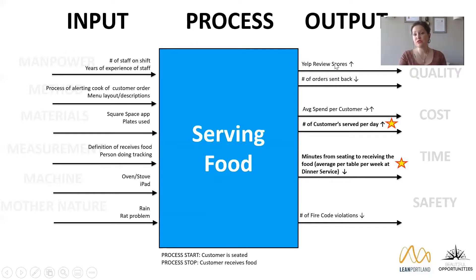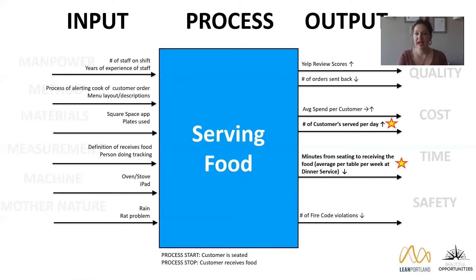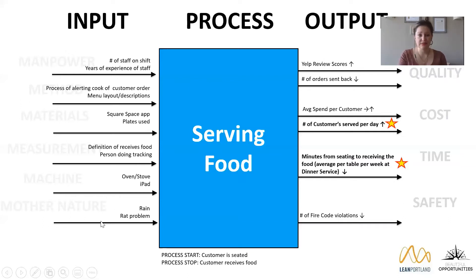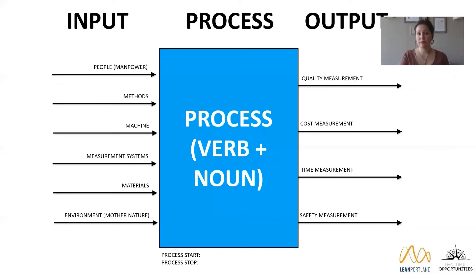When reviewing Yelp scores, a manager and an employee may have different perspectives on what's attributable to staff. For machines, a restaurant has ovens, stoves, iPads, and cash registers. For Mother Nature, a New York restaurant has to deal with rats and rain — when it rains, everyone comes in off the street, which could cause fire code violations or health code violations to go up or down.